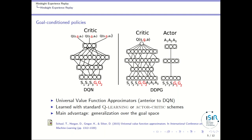The idea is that with such a network, if you change the goal, you may eventually be able to generalize over different goals. The same applies for DDPG: you have a critic that tells you how good it is to perform a particular action given a state and a goal — that's a particular Q-value. Your actor takes a state and a goal as input and provides an action. With such architectures, you can have generalization over goals.